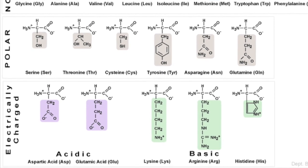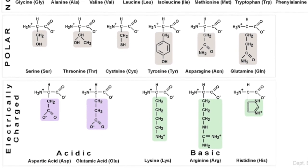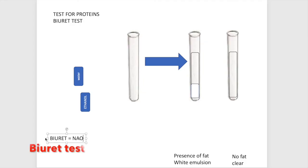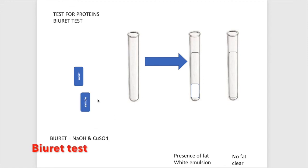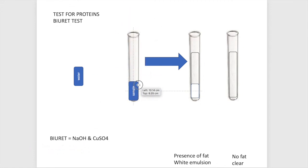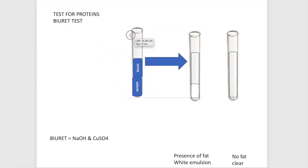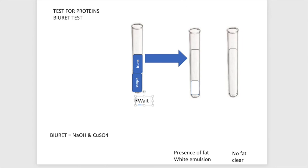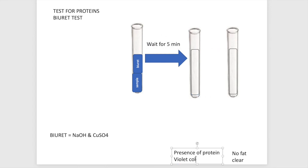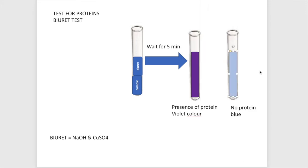To test for proteins, you perform the Biuret test. A Biuret solution is mainly sodium hydroxide and copper(II) sulfate, and it gives a dark purple color when proteins are present. To do this test, just add equal volumes of sample and Biuret solution and wait for 5 minutes — it's that simple.